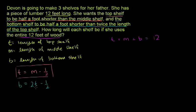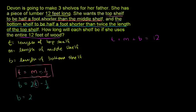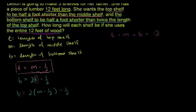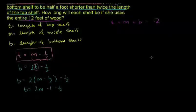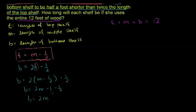We have B in terms of T, so let's convert that to terms of M. Since T = M - 1/2, we substitute into B = 2T - 1/2 to get B = 2(M - 1/2) - 1/2. Distributing the 2: 2M minus 1, minus another 1/2, which gives B = 2M - 3/2. So now we have everything expressed in terms of M.